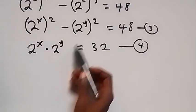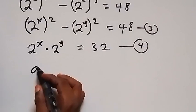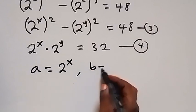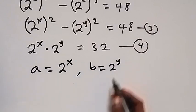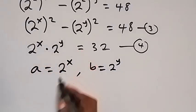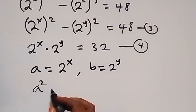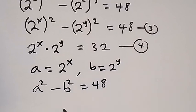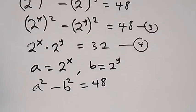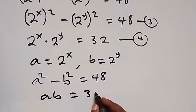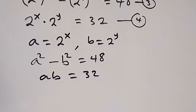From equations 3 and 4, we have 2 raised to power x and 2 raised to power y. Let a equal 2 raised to power x and b equal 2 raised to power y, so we can rewrite both equations in terms of a and b. Equation 3 becomes a squared minus b squared equals 48, and equation 4 becomes ab equals 32.